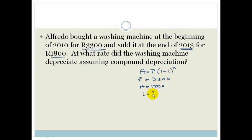We want to know what I is. But we know that he bought it at the beginning of 2010, so he bought it at the beginning of 2010. He has 2011, he has 2012, he has 2013, he has 2014, and he has 2015. And he bought it at the beginning of 2010, but he sold it at the end of 2013. So the amount of years that it was depreciated for is 1, 2, 3, 4 years. So N equals 4.